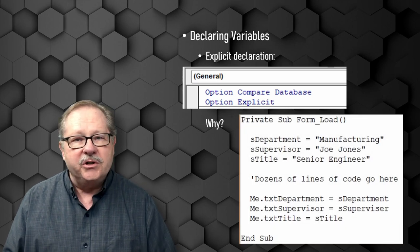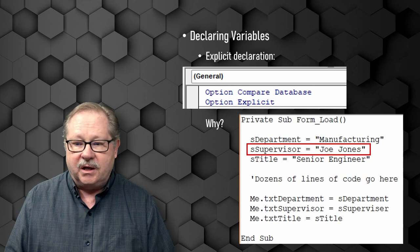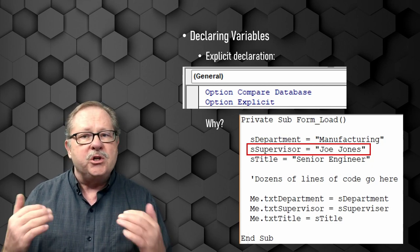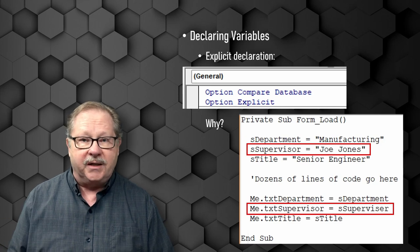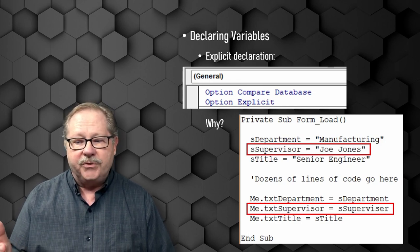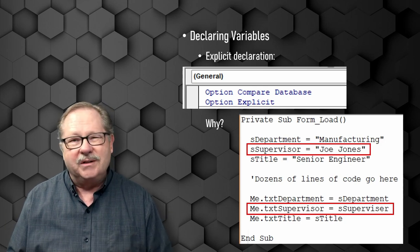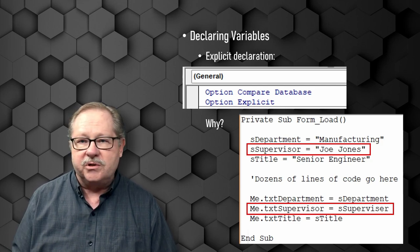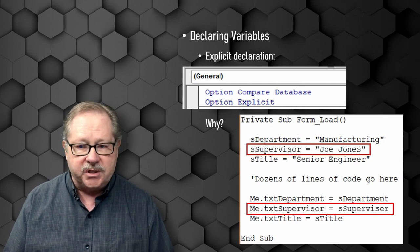Here's an example of how Option Explicit would keep you out of trouble. We have a variable labeled as Supervisor — we've declared it up above and assigned it the value Joe Jones. Now we go to use that variable down here: Me.txtSupervisor = sSupervisor. Well, sSupervisor has Joe Jones in it. But that version of supervisor has 'er' instead of 'or', so you would be perplexed as to why your text box called txtSupervisor didn't have a value in it — you think you put the value in, but you actually didn't. If you had Option Explicit, you'd get to that line, it would say there's no variable by that name, and you would quickly realize you spelled it wrong and fix it on the fly before having to do a bunch of debugging later.